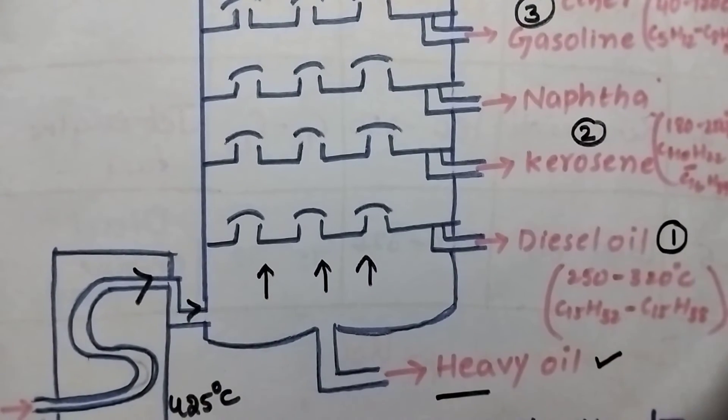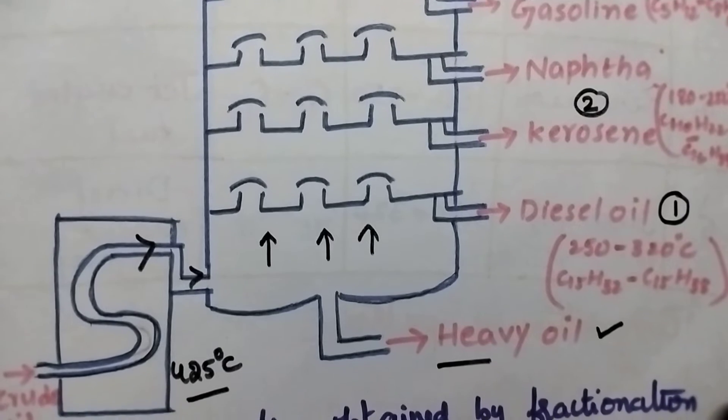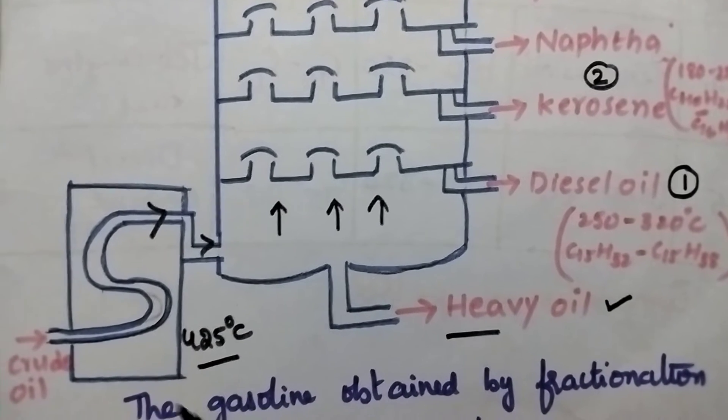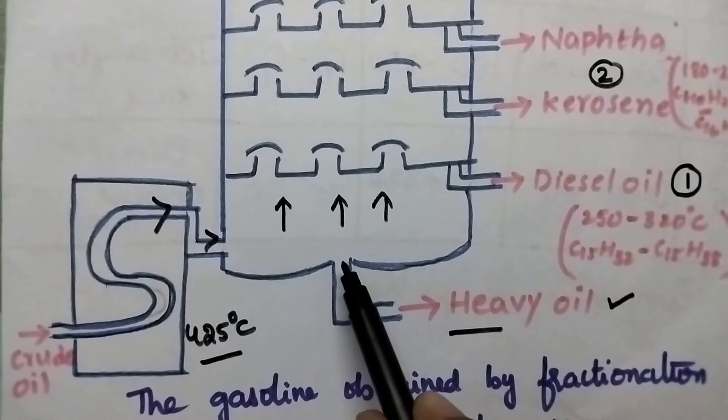Let us see the apparatus used for the fractional distillation of the crude oil. It consists of iron retort and fractionating column.